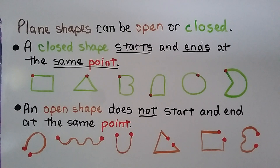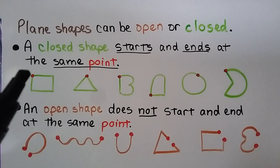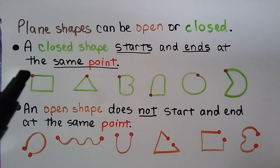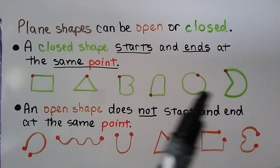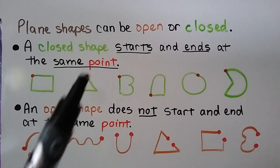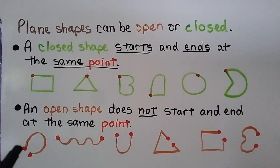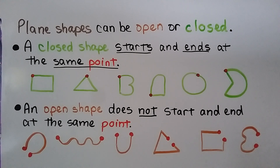Plane shapes can be open or closed. A closed shape starts and ends at the same point. So for this shape, it starts here at this red point, goes around, and ends at that red point. Same with all of these — they start and end at the same point. An open shape does not start and end at the same point. It starts at one place, one point, one location, and ends at a different location.